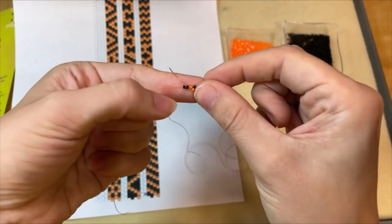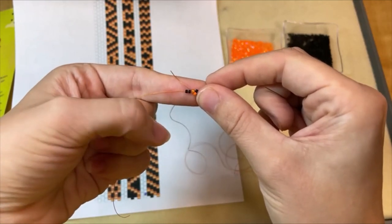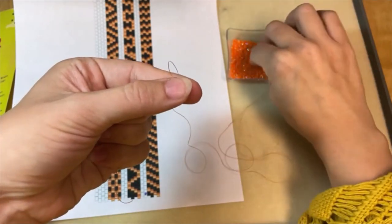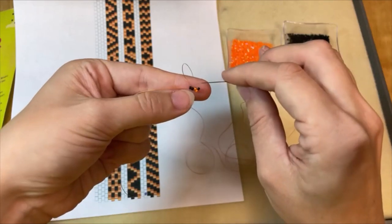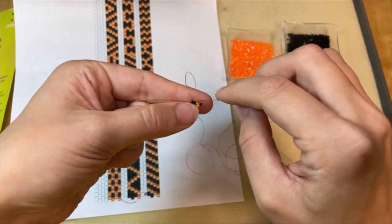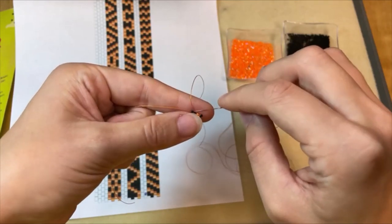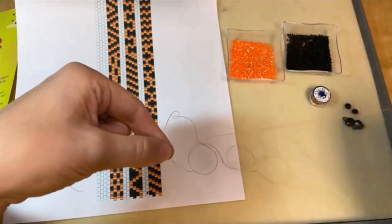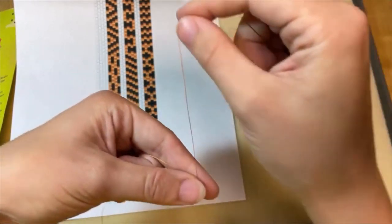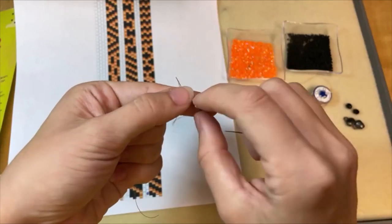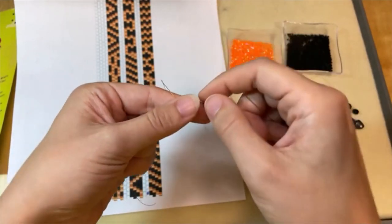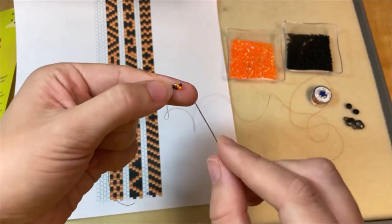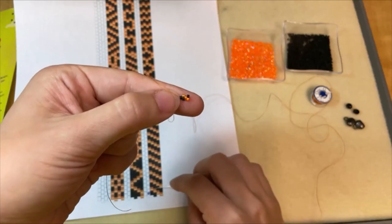Now the next color in the third row is another orange bead so I'm going to pick up an orange bead here and I'm going to skip over that next black bead and go through the last black bead. So that's the third row, we're coming out of that last black bead and then the next bead in the fourth row is an orange bead.